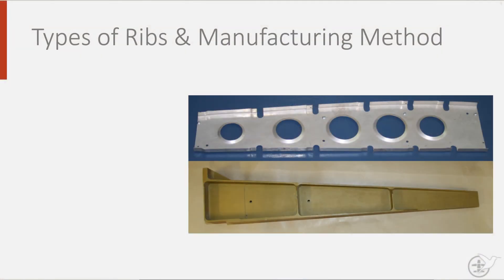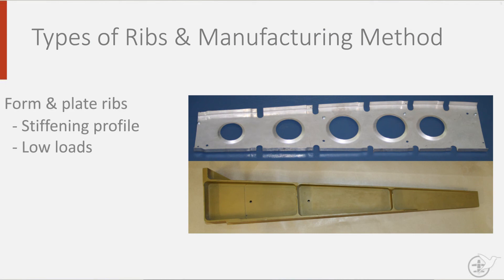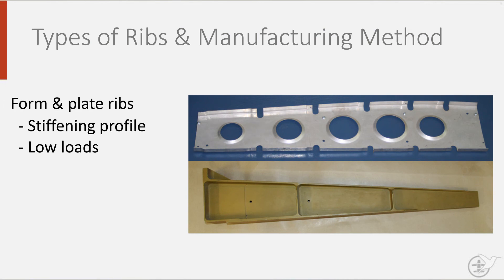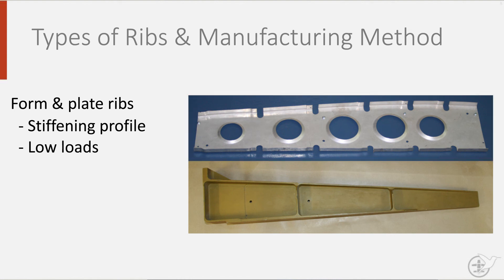The design and the way ribs are manufactured are influenced by the load. If a rib has relatively low design loads, you will perhaps select a rib that is formed from sheet or plate material. You can create extra stiffness by adding stiffening profiles to that rib, as can be seen from the formed aluminium rib with a stiffened circular cutout.